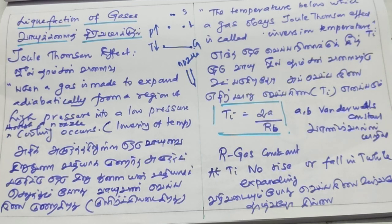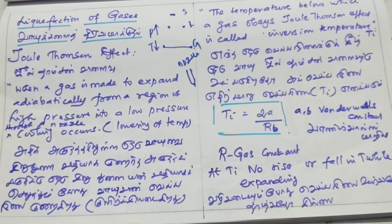High pressure gas expands into a low pressure region. That gas becomes cool — this is the Joule-Thomson effect. That gas is made to expand adiabatically; this is the process. We consider isothermal change and adiabatic change.